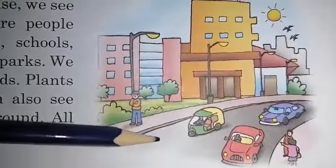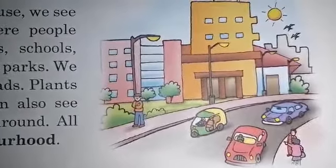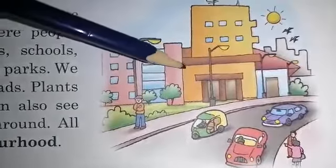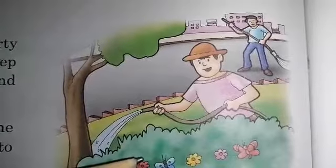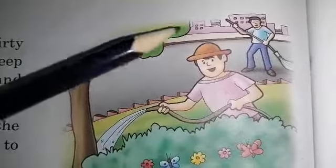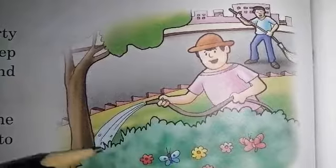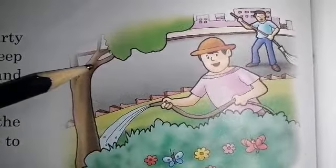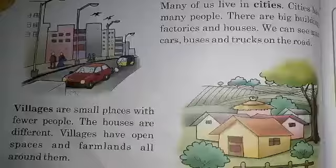We see different types of buses, cars, rickshaws, etc. on roads. We can also see different types of plants and animals that are roaming around, and all these make our neighborhood. So we should not stay in dirty surroundings — we must clean our neighborhood and take care of the plants around us, as trees help us keep the air fresh and cool.